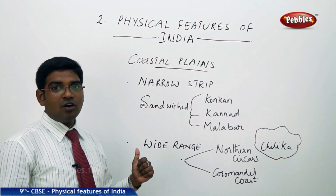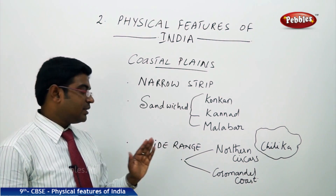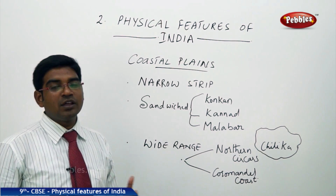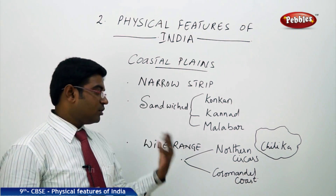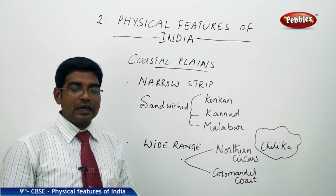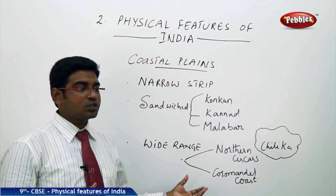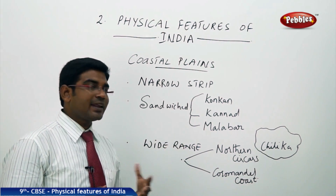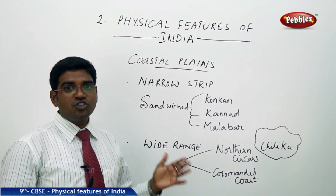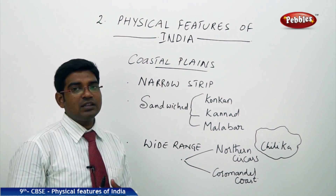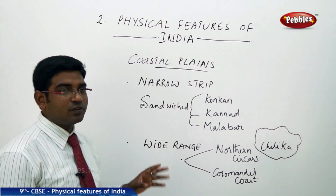The eastern coastal plains are very wide and called with different names locally in different regions. On the northern part, it is called Northern Sarkars, and on the southern part, it is known as the Coromandel Coast. An important attraction here is Chilika Lake on the eastern side, which is a very good attraction spot for many tourists.